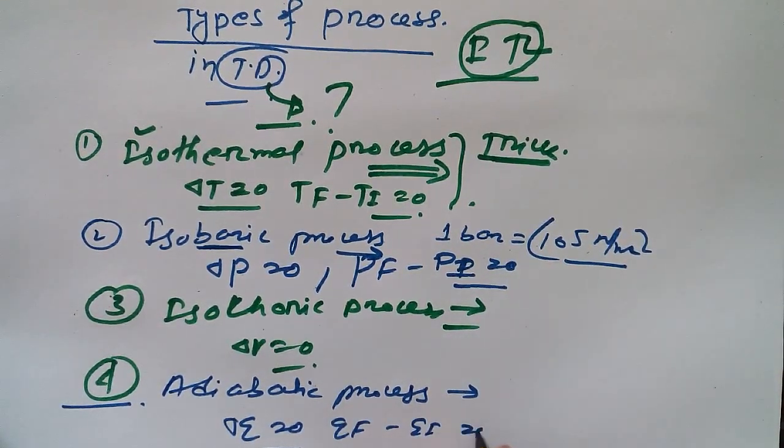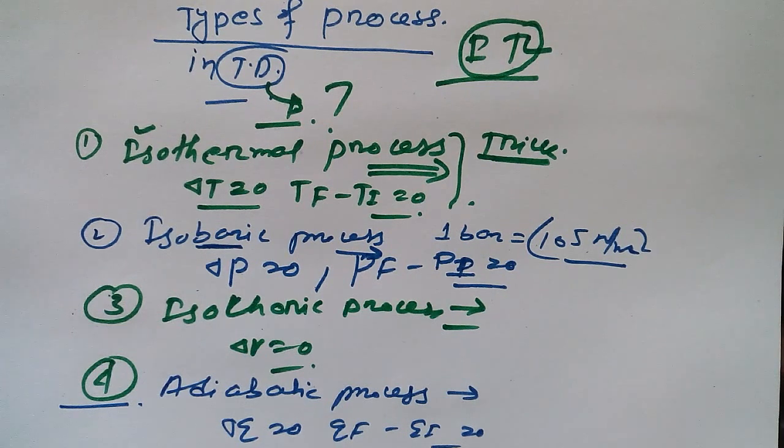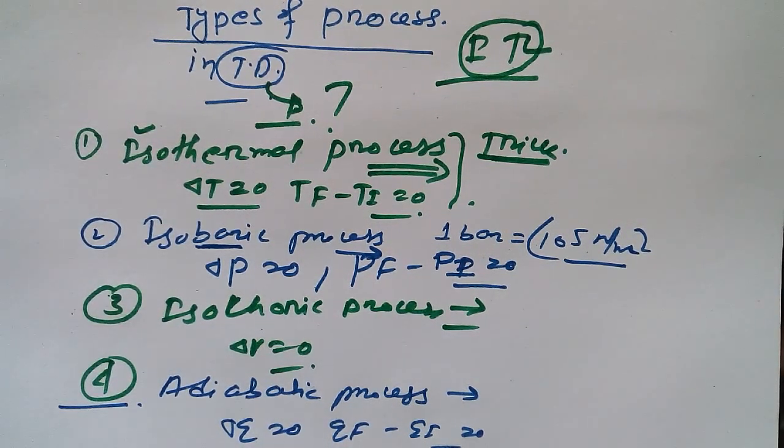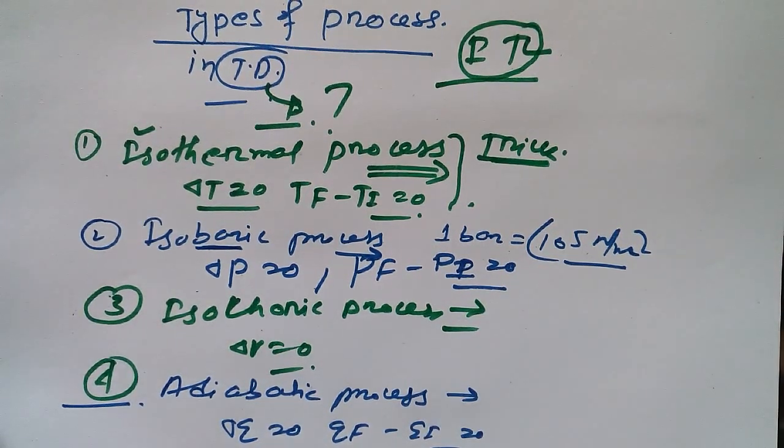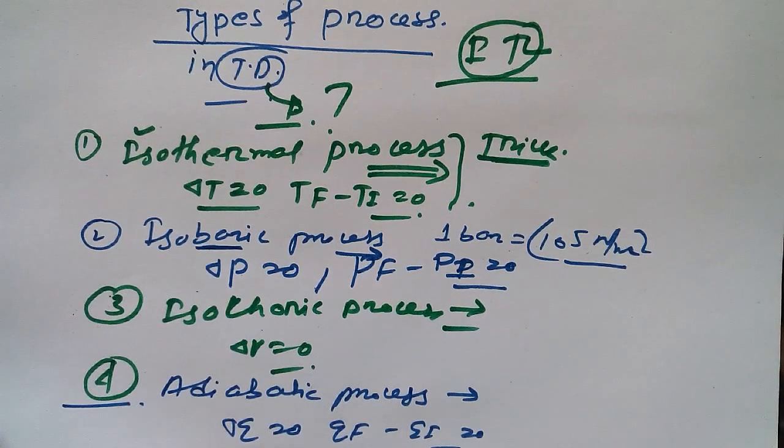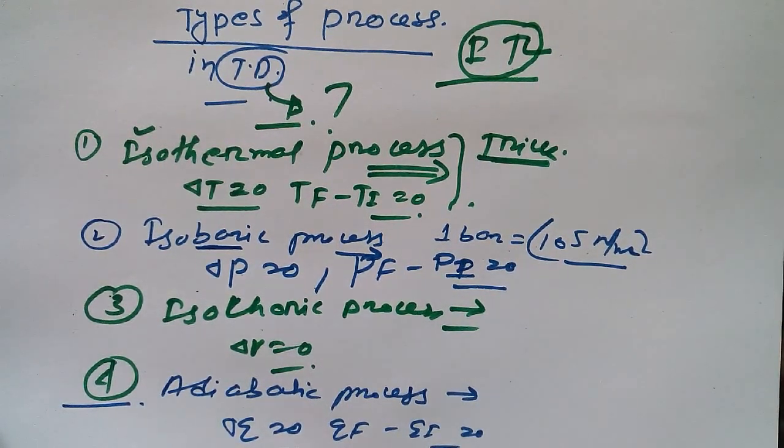Adiabatic process means Delta Q equal to zero. That means Q final minus Q initial is equal to zero. Now last, what is that? Polytropic process. There is also another process, throttling, but I'm not going to discuss about throttling process here. I am going to discuss about polytropic process.